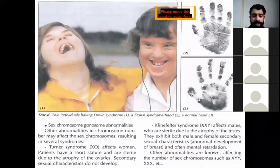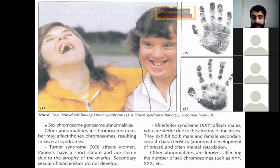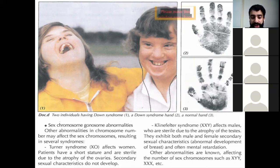Document D shows two individuals: one with a Down syndrome hand and one with a normal hand. There are visible differences between the two — the Down syndrome hand differs from the normal hand. This leads to the topic of sex chromosome, or gonosomal, abnormalities.